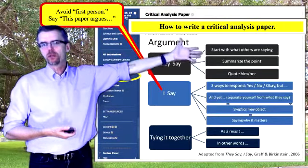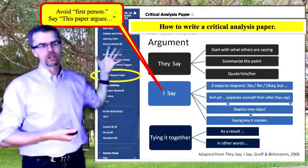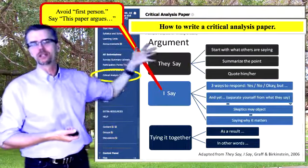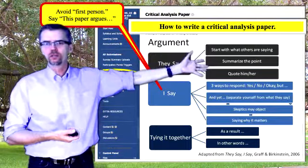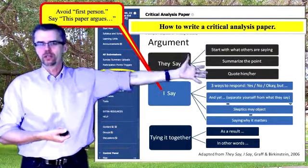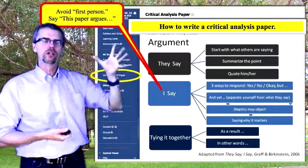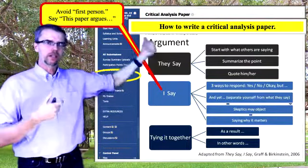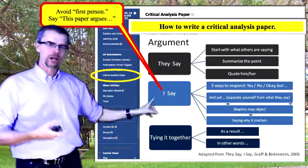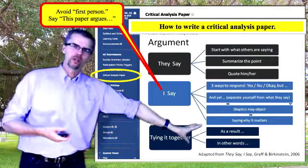You can't base your argument on what you say unless you build it on the foundation of what other experts in the field have said. In a research paper this is called the literature review section. In a critical analysis paper, you still have to go into that mindset of 'they say,' and because of what they say, 'this is what I say,' and then you conclude by tying it all together.